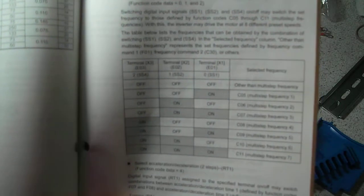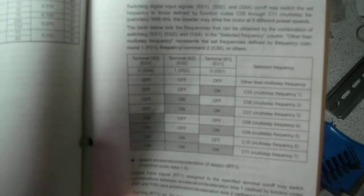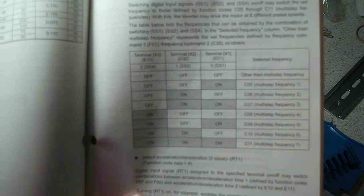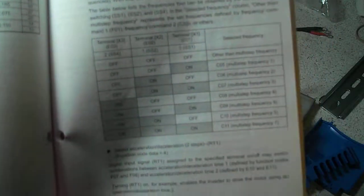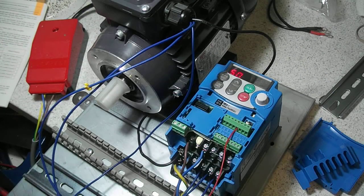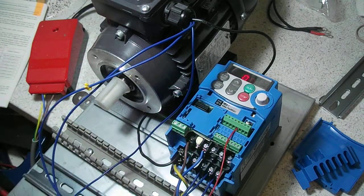So all I want at the moment is just another frequency. I want to get it down to half speed, so I'm going to set function C05 to 25 Hertz. So the way you do that, let's zoom in again so you can see what I'm doing.